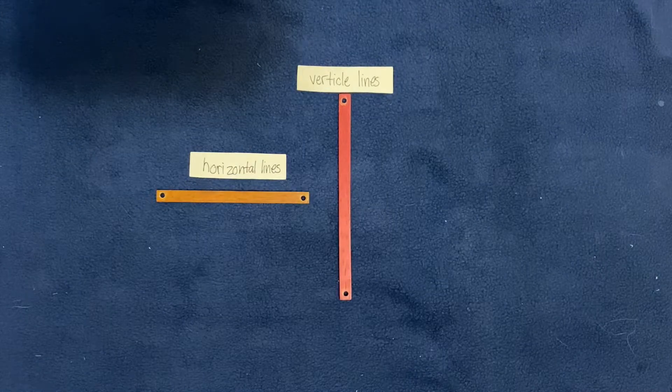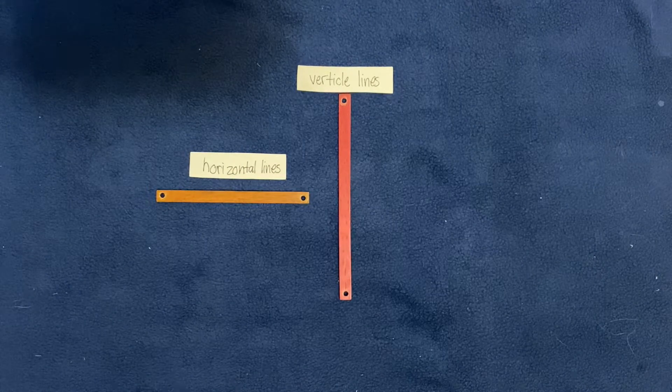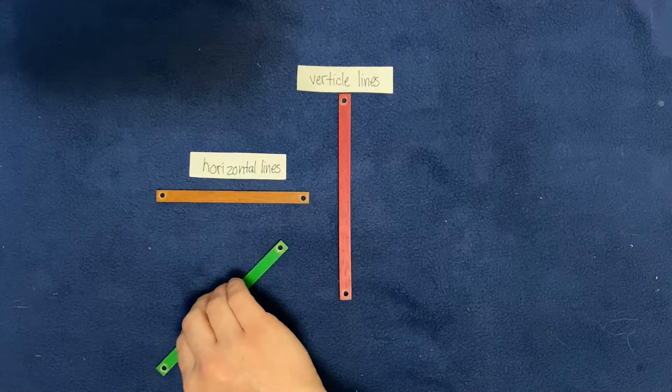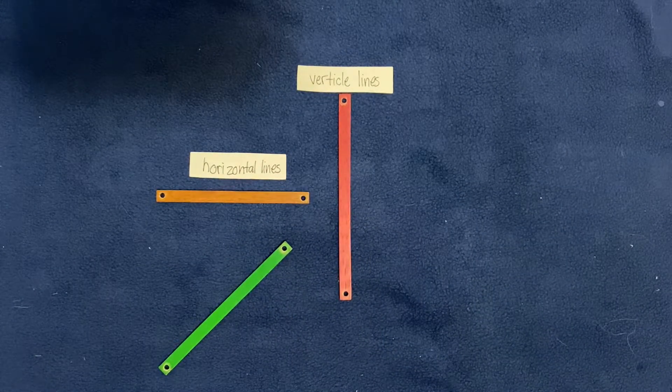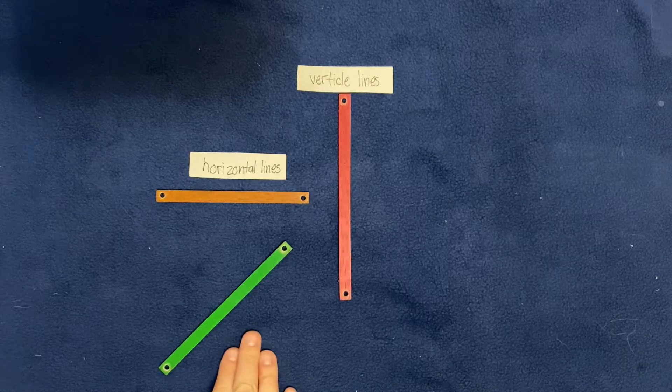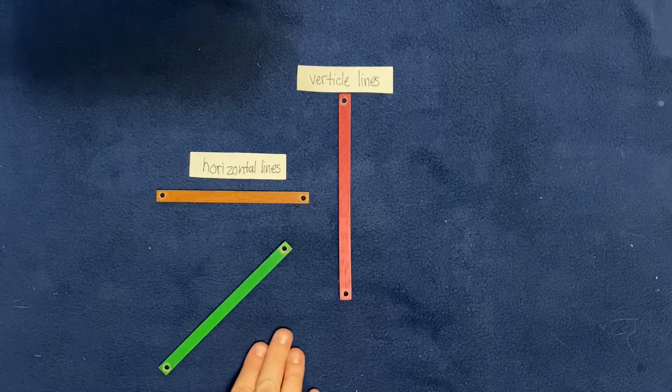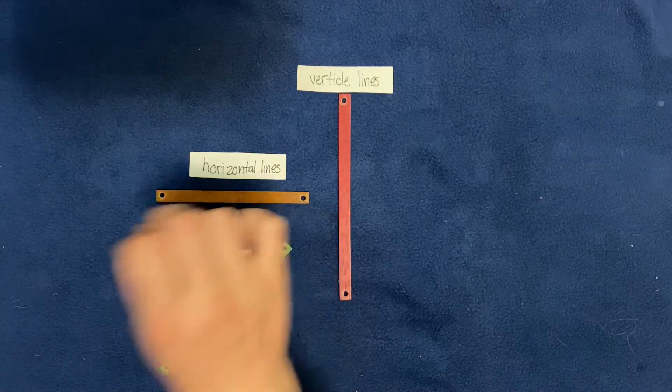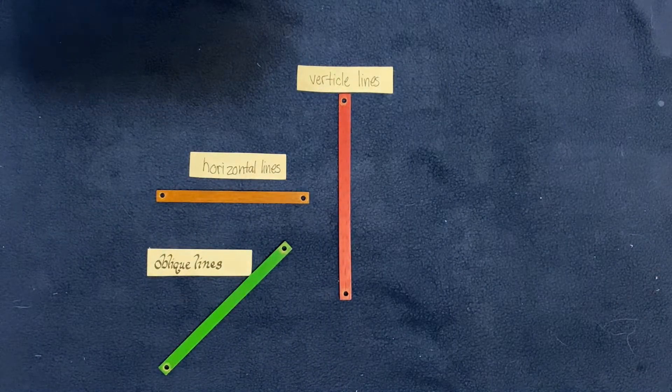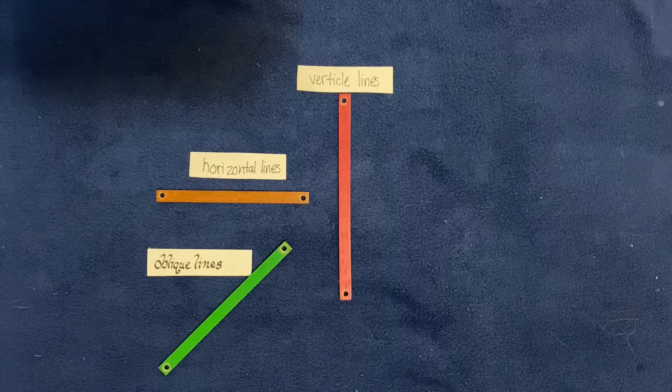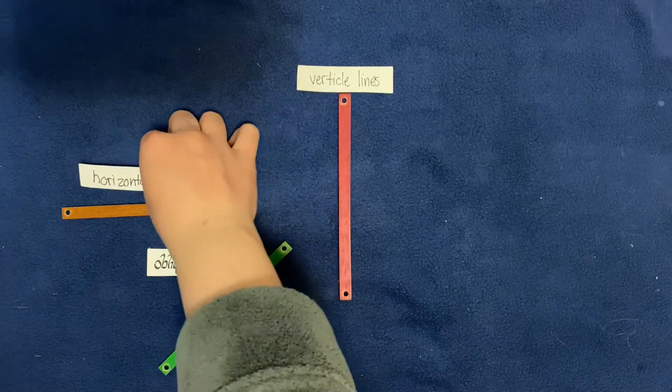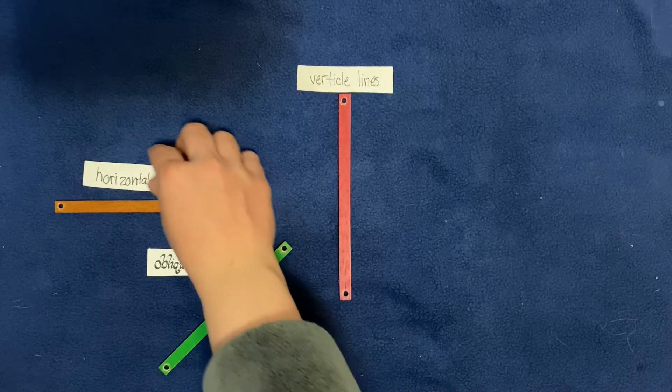Now here I have a line. It's not going side to side or up and down. A lot of people call this a diagonal line. Well we have a very special and proper name for that and that's called oblique lines. So these are three types of lines: horizontal going from side to side, vertical going up and down, and oblique just going diagonal.